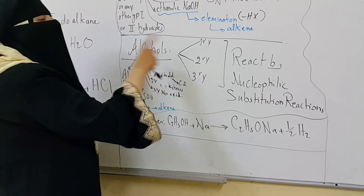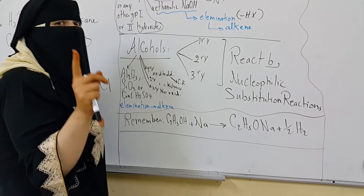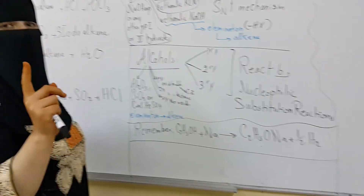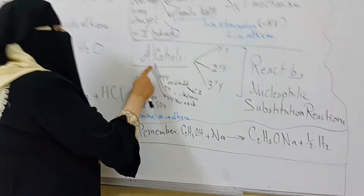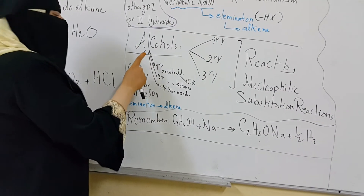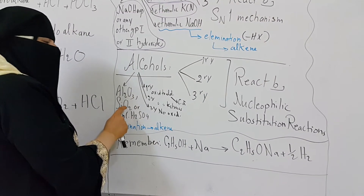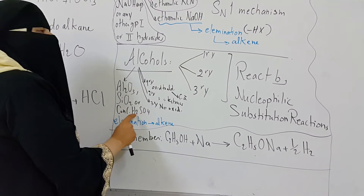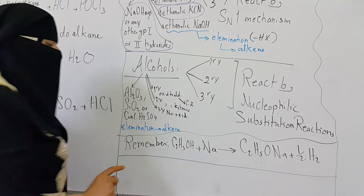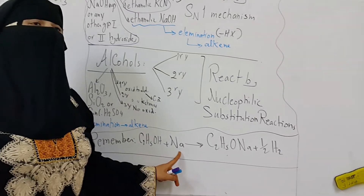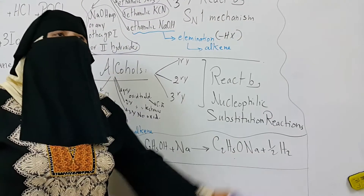Oxidation occurs using acidified potassium manganate or acidified potassium dichromate. Alcohols can also undergo elimination reactions with aluminum oxide, silicon dioxide, or hot concentrated sulfuric acid to form the corresponding alkene.